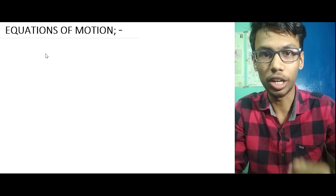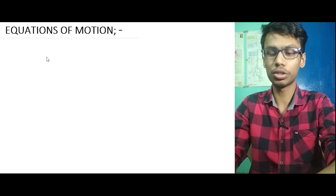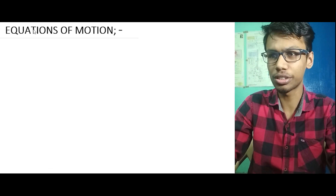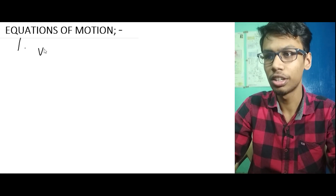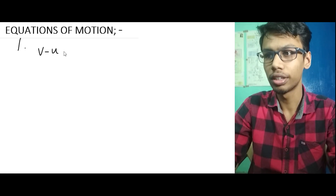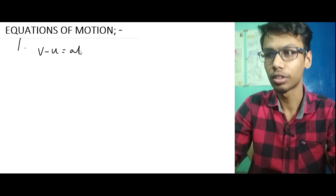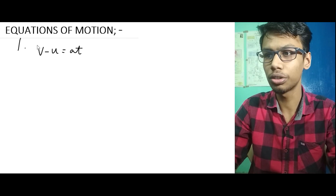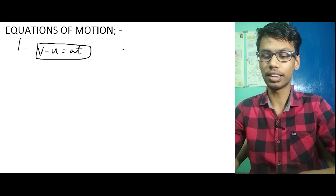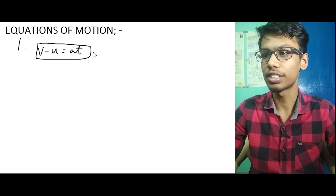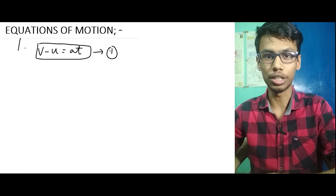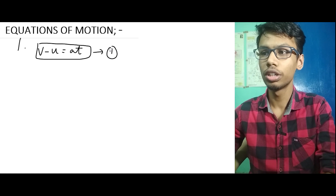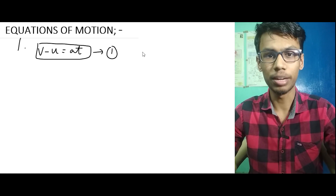We will talk about equations of motion. There are three basic equations. The first equation is v minus u equal to a into t. This means final velocity minus initial velocity is equal to acceleration into time.